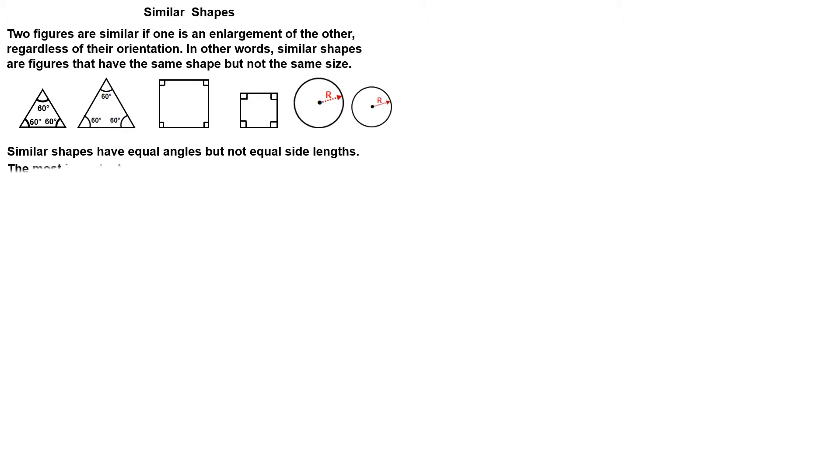The most important property about similar shapes is that the ratios of the corresponding sides are equal, which means that they are in proportions.